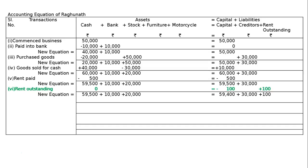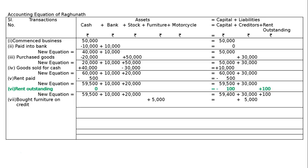Transaction number 7: bought furniture Rs. 5,000 on credit. This will increase our creditors as well as furniture by Rs. 5,000. Furniture increased by Rs. 5,000 and creditors increased by Rs. 5,000, giving us a new total equation.